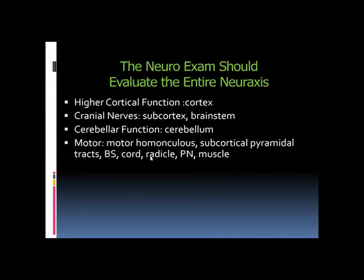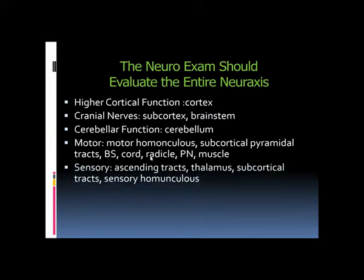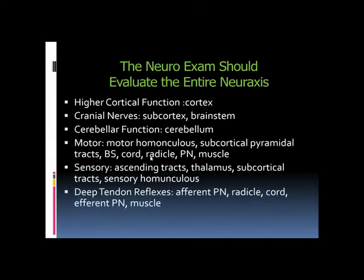Upper motor neuron lesions are caused by cortical lesions and corticospinal tract involvement in the spinal cord. Lower motor neuron lesions are due to nerve and root lesions, with muscle also classified as lower motor neuron type. The neuromuscular junction has a separate presentation. Upper motor neuron includes subcortex, cortex, brain stem, and cervical and dorsal cord; lower motor neuron includes peripheral nerve and radicals.